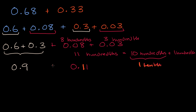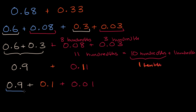And when you add everything together, you get nine-tenths plus one-tenth plus one-hundredth. So nine-tenths and one-tenth is going to be ten-tenths, which is the same thing as one whole. So this is going to equal one plus one-hundredth — one and one-hundredth. And we are done.